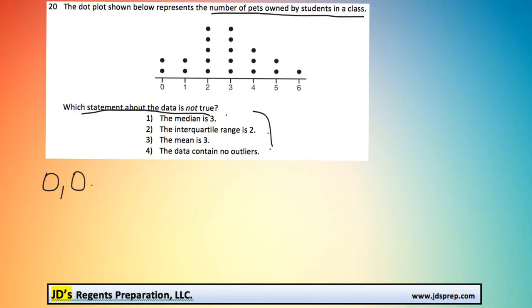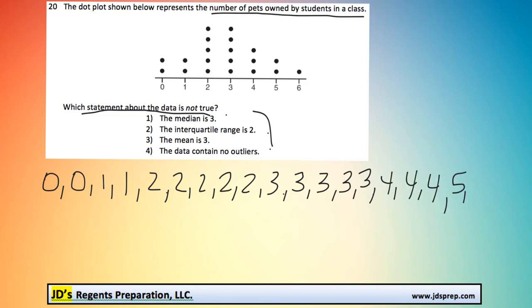So we have two zeros to start off, two ones. After that there's five twos. Then we've got five threes. Then we've got three fours. A couple fives. And then finally, one six.